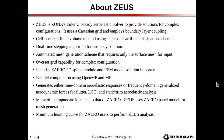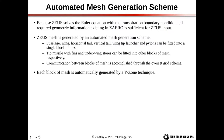The overall architecture is similar and the same concepts are used, so if you're familiar with Z-Aero, you'll be very comfortable using Zeus. Because Zeus solves the Euler equation with the transpiration boundary condition, all the required geometric information existing in Z-Aero is sufficient for Zeus input. If you have an existing Z-Aero model, generally only minor modifications are needed — the biggest modification will typically be increasing the mesh density for a suitable Zeus computation.